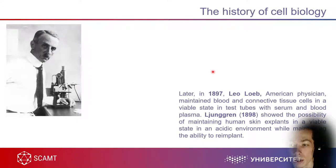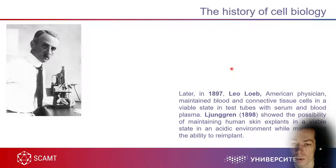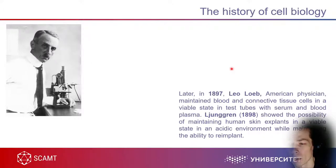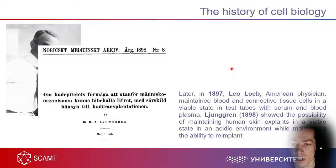At the end of the 19th century, American physician Leo Loeb found that some blood and connective tissue cells can be maintained in a viable state in a liquid drop — like lymph — taken from an animal organism. In 1898, a Norwegian or Finnish scientist Jungian showed that some human skin and plant samples can be maintained in an acidic environment.